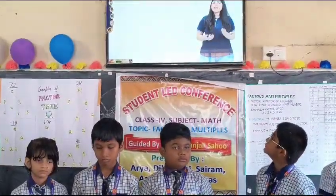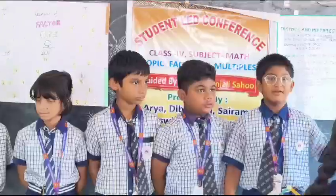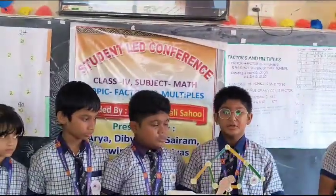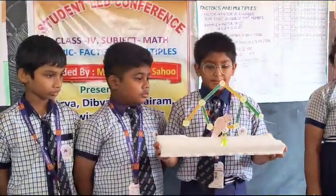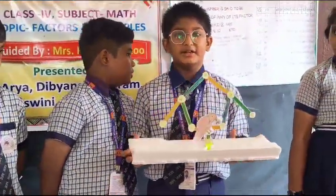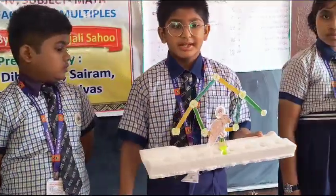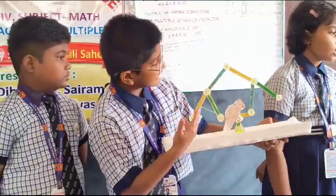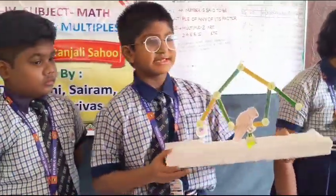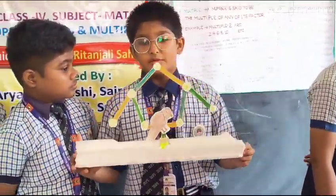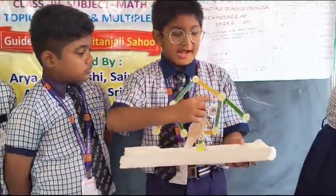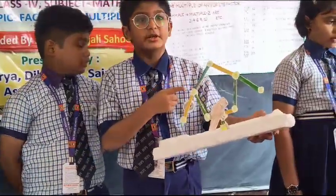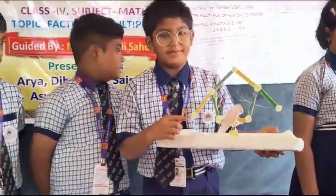We can express 48 as a product using a factor tree. This is the factor tree, and these are the factors of 36. 36 is a product when 4 and 9 are multiplied, and 4 is a product when 2 and 2 are multiplied.